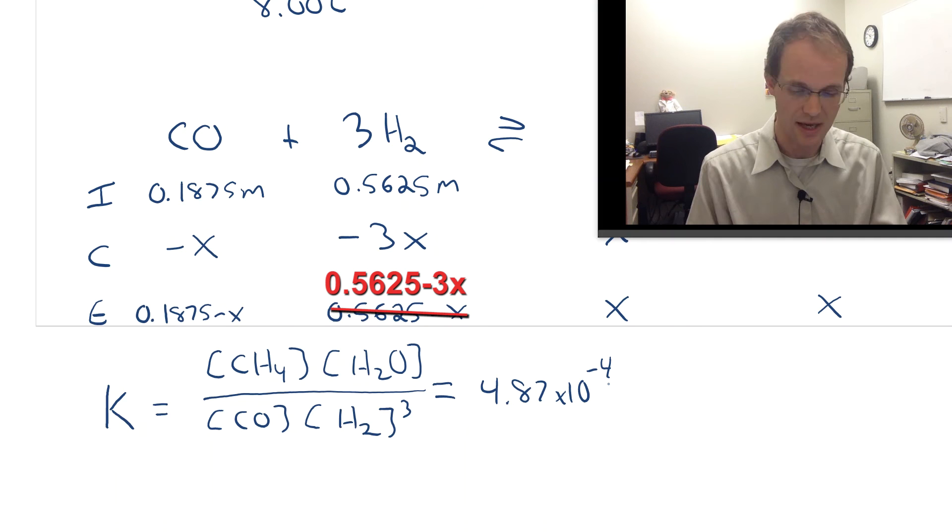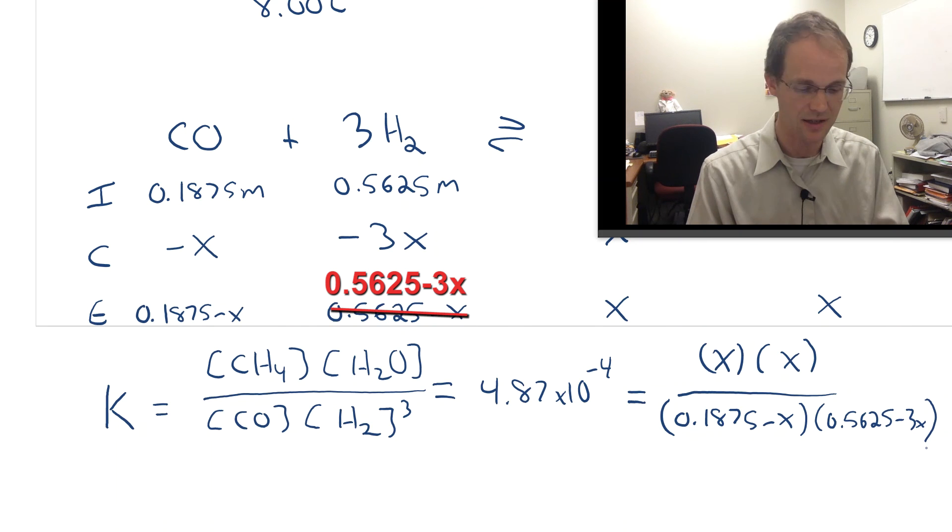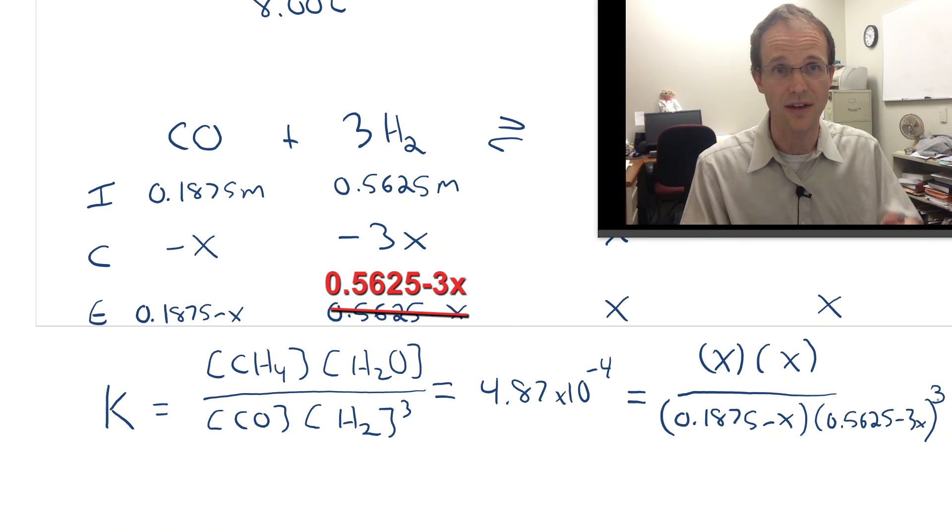Let me go ahead and substitute into that K expression those values I just found in the E line of my ICE table. CH4 was simply X, H2O was simply X, CO was 0.1875 minus X, and H2 was 0.5625 minus 3X. What people forget a lot of the time here is to put that cube on there. I've got to have that cube there because my equilibrium expression says concentration of H2 cubed. Now if you were to try to write that out, oh my goodness, would that be difficult. You've got a cube there, you've got a square. It would be a fourth order polynomial, and I don't like solving fourth order polynomials. They're hard to do.